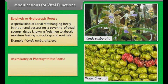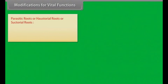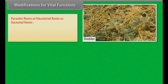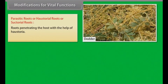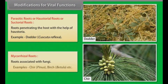Assimilatory or photosynthetic roots: Green roots capable of photosynthesis. Example: water chestnut, Tinospora, etc. Parasitic roots or haustorial roots: Roots penetrating the host with the help of haustoria. Example: Cuscuta. Mycorrhizal roots: Roots associated with fungi. Examples: cheer, birch, etc.